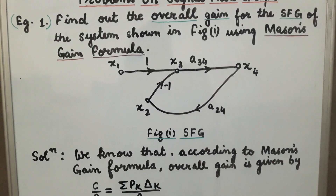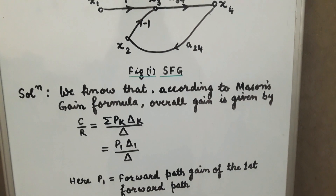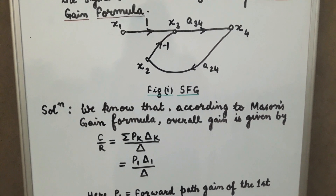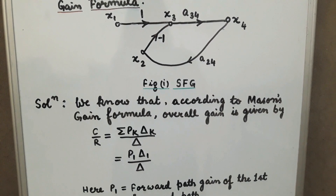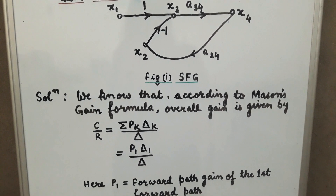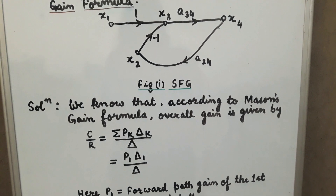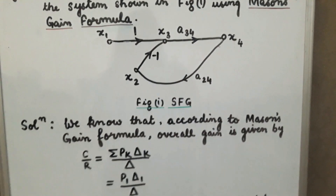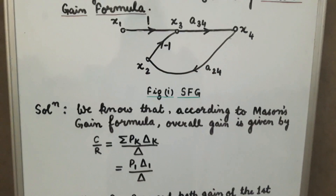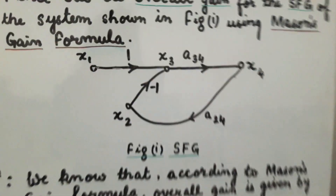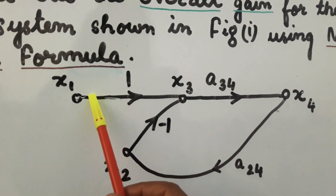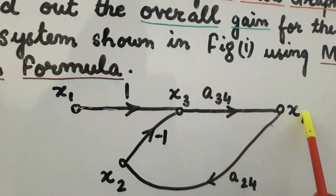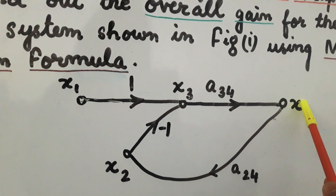We will find the overall output-to-input ratio x4/x1 of this system. According to Mason's gain formula, the overall gain is given by c/r = summation of p_k·delta_k divided by delta. To find p_k, we first find the number of forward paths. From the signal flow graph, there is only one forward path from x1 to x3 to x4.